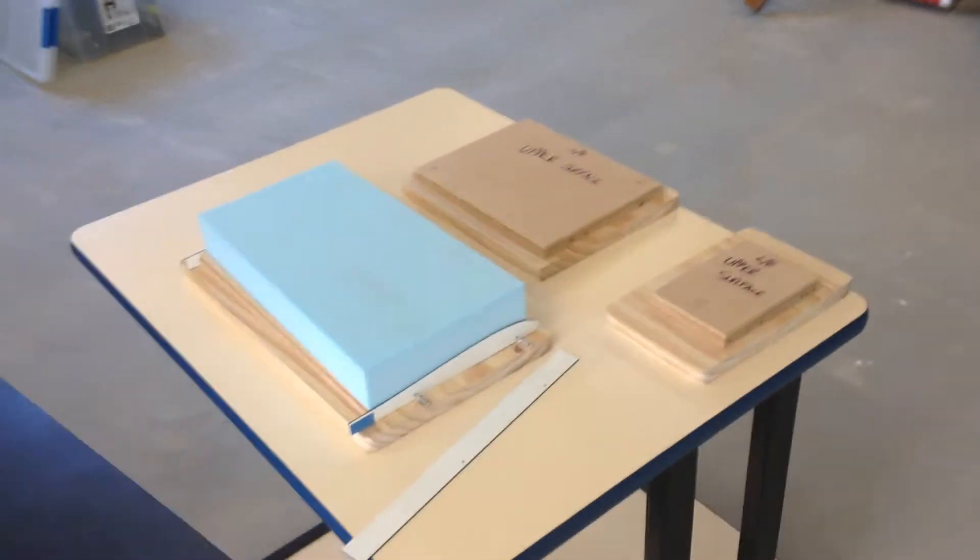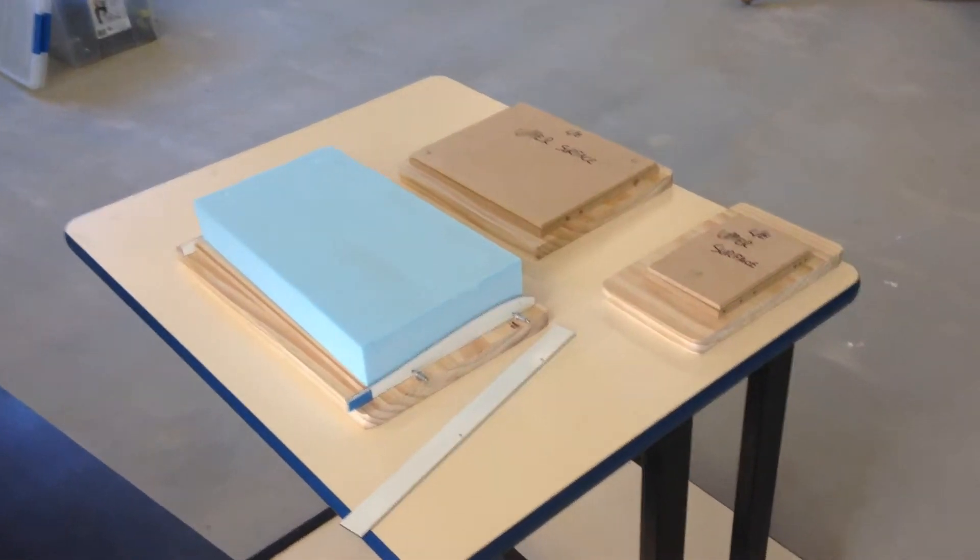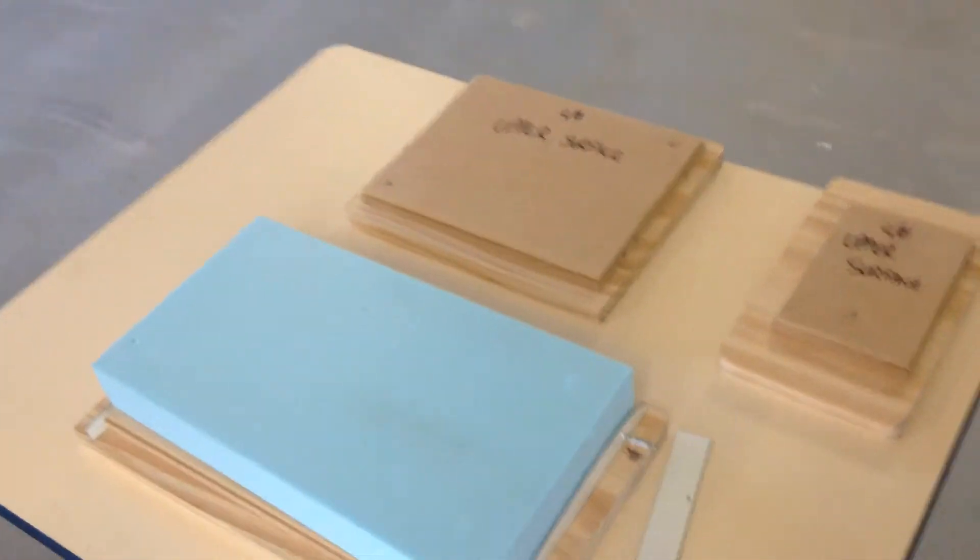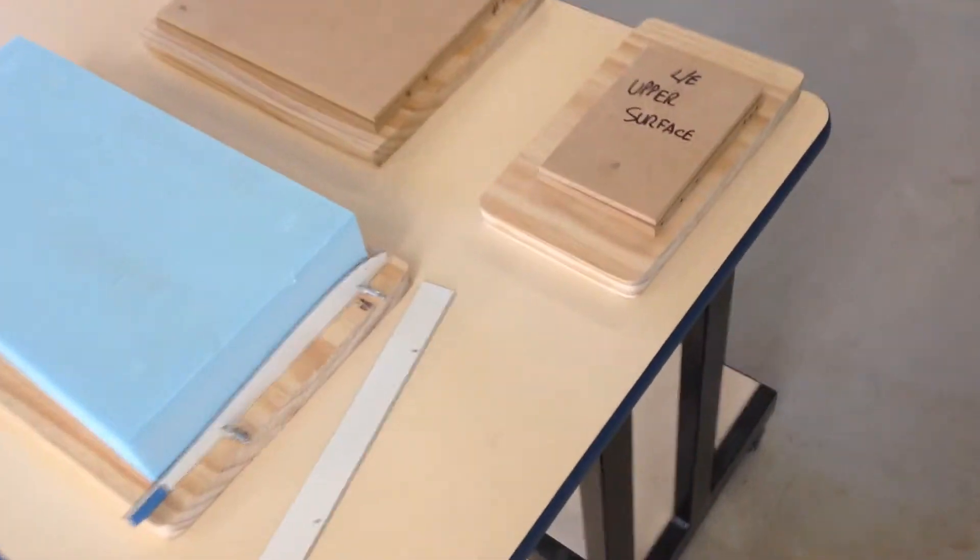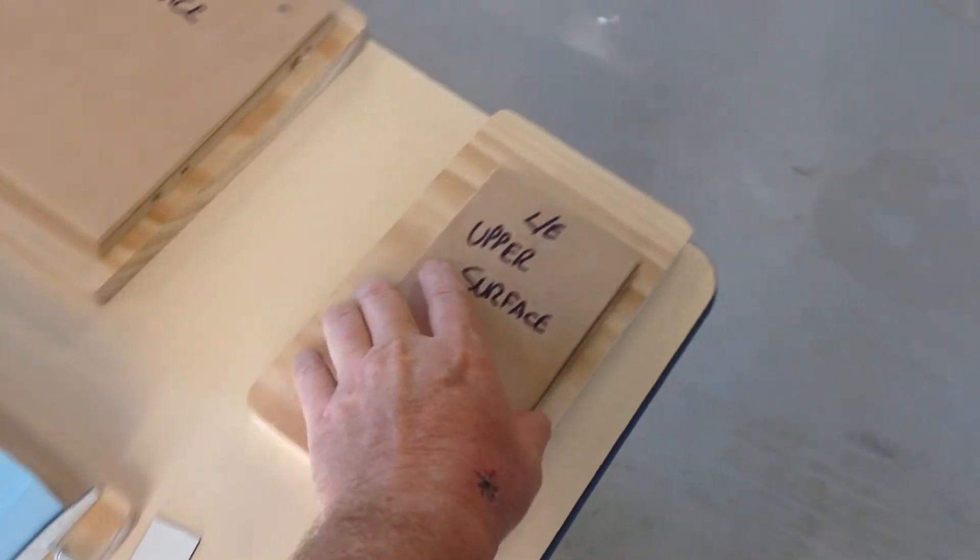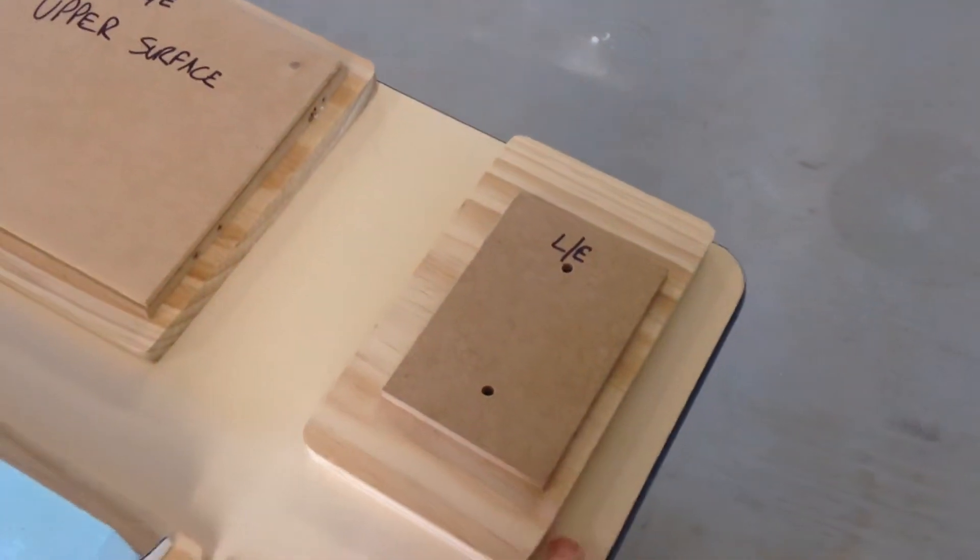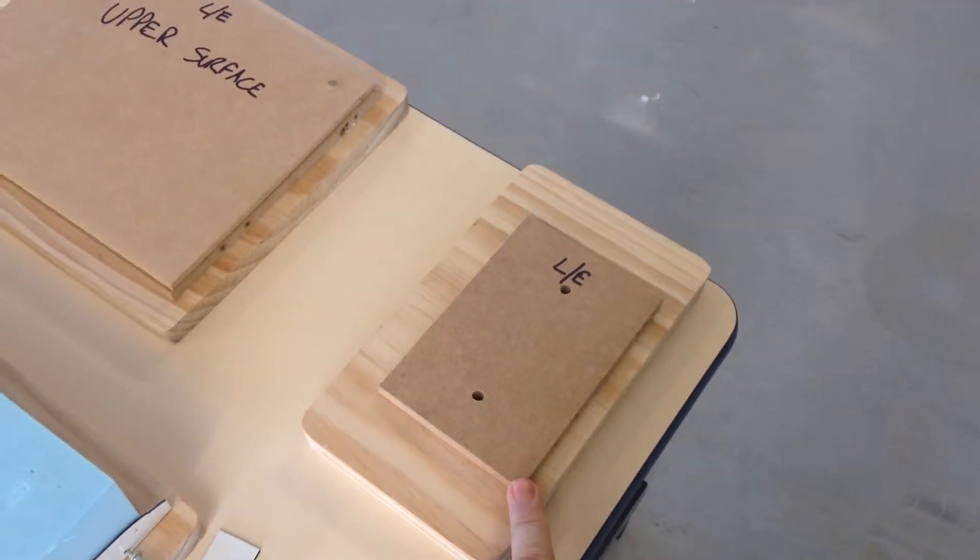Here's the next installment: the core cutting jigs. So I've got three of them made up, one for each blank. Just a piece of flat pine, some MDF glued to it, and I cut the bottom core half.